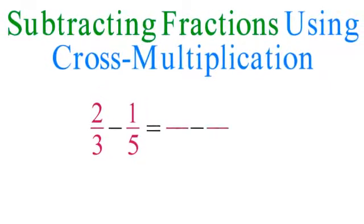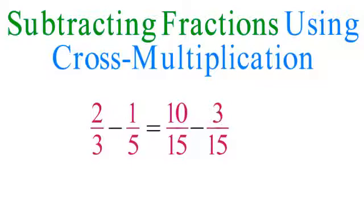For example, to subtract 2 thirds minus 1 fifth, first find the common denominator by multiplying 3 times 5 equals 15. Now, cross-multiply: 2 times 5 equals 10, and 1 times 3 equals 3. Placing these results in the numerators, the resulting fractions have the same denominator, so you can subtract: 10 fifteenths minus 3 fifteenths equals 7 fifteenths.